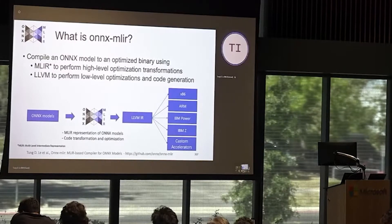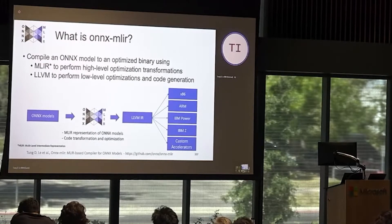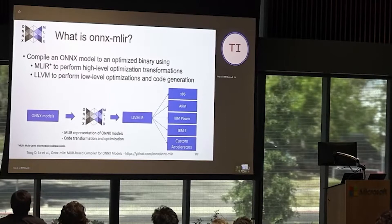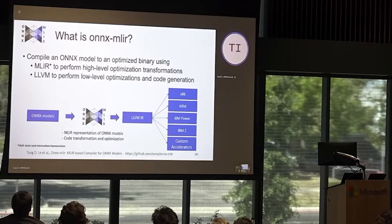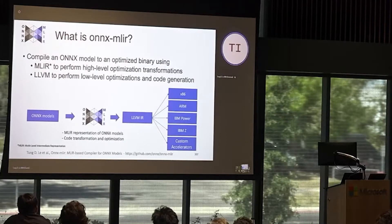While LLVM is well-known for low-level optimization and code generation, MLIR is an emerging infrastructure for high-level optimization and code transformation. In that sense, the compiler is totally based on open-source infrastructure.